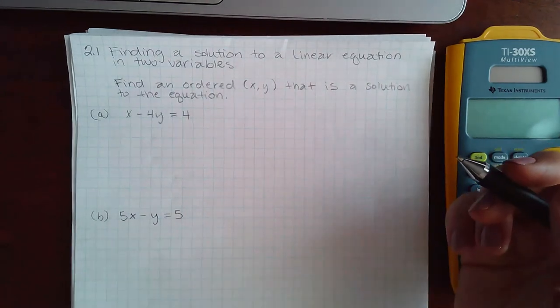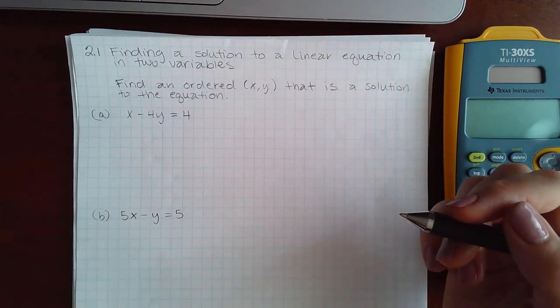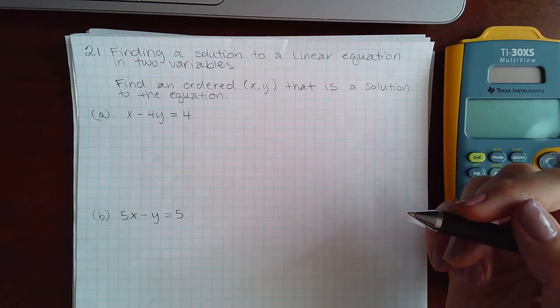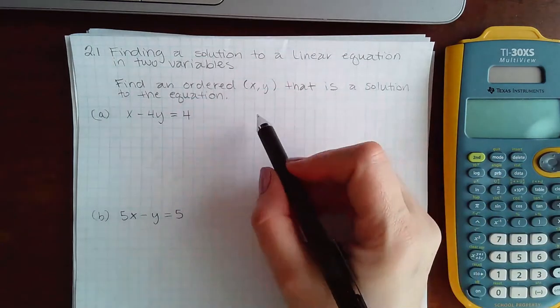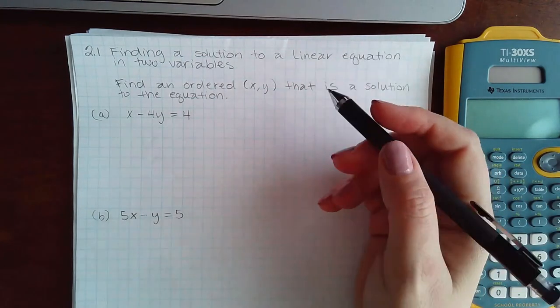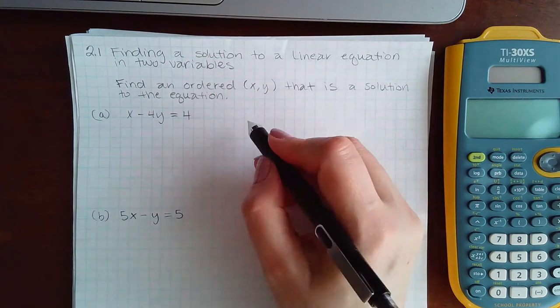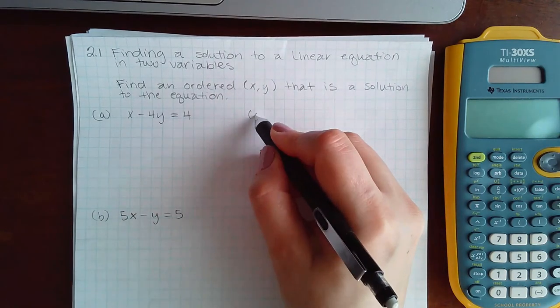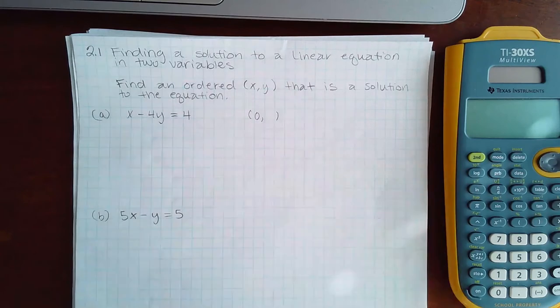There's an infinite number of possibilities as an answer. However, that does not mean that everything is an answer. You have to pick a coordinate and then solve. I like to pick x values, and typically when I pick x values, I like to pick zero just because zero is nice.